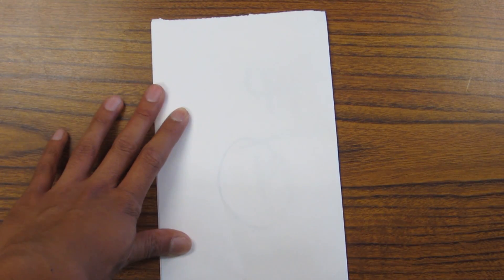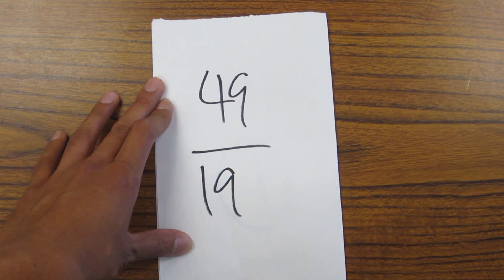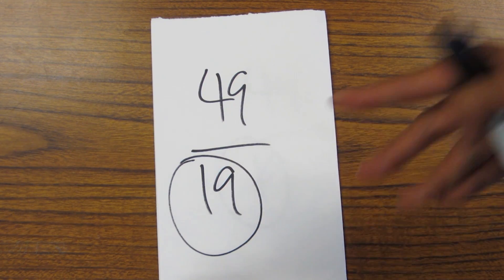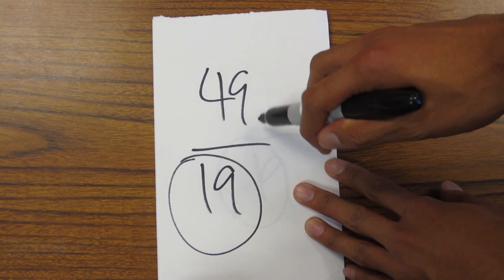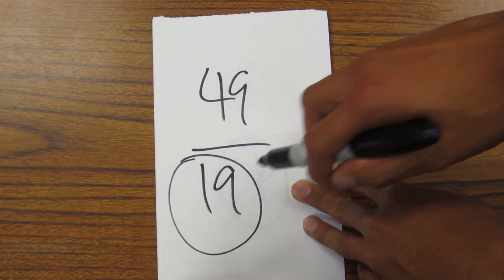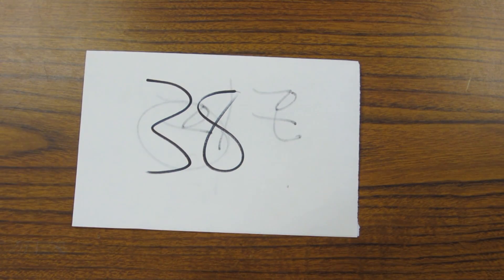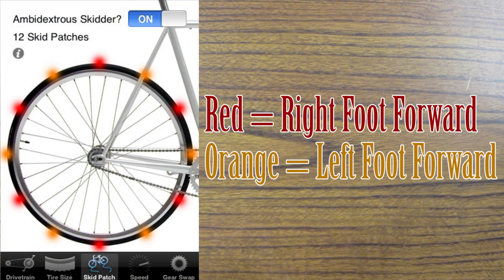Another really great ratio to run for street use is 49/19. Since this fraction cannot simplify any further, 19 is the number of skid patches. But because the numerator is an odd number, assuming the rider is an ambidextrous skidder, we can double the amount of skid patches. So in reality, the number of skid patches here is a whopping 38. This is because the left foot's skid patches end up being halfway between the skid patches made on the right foot.